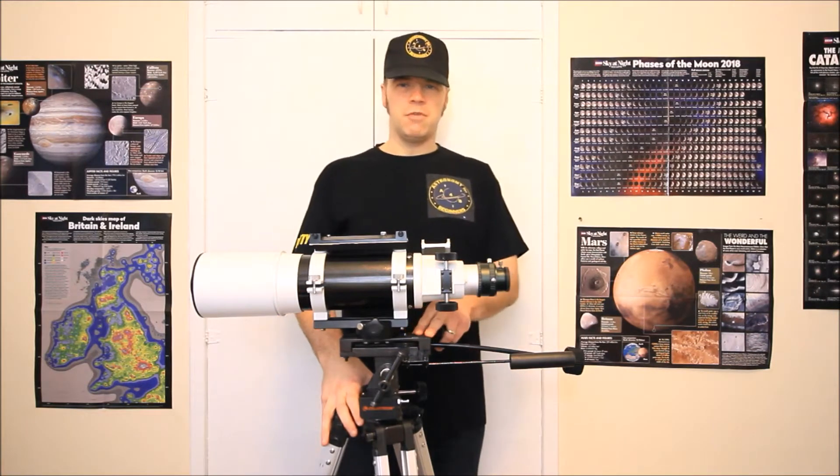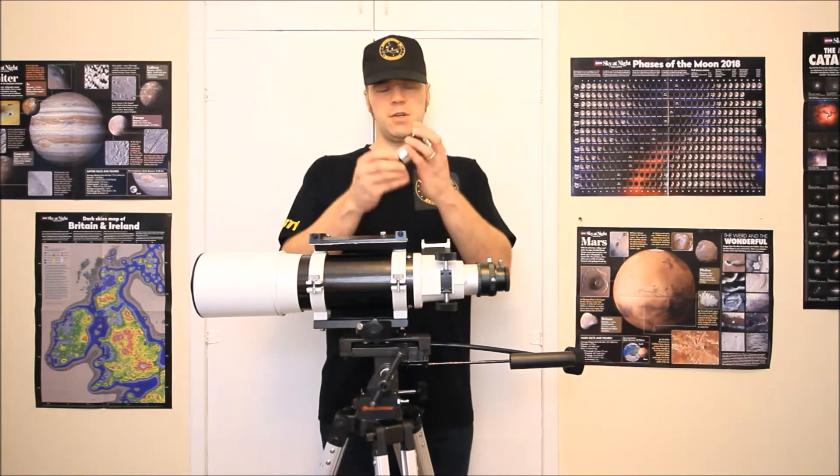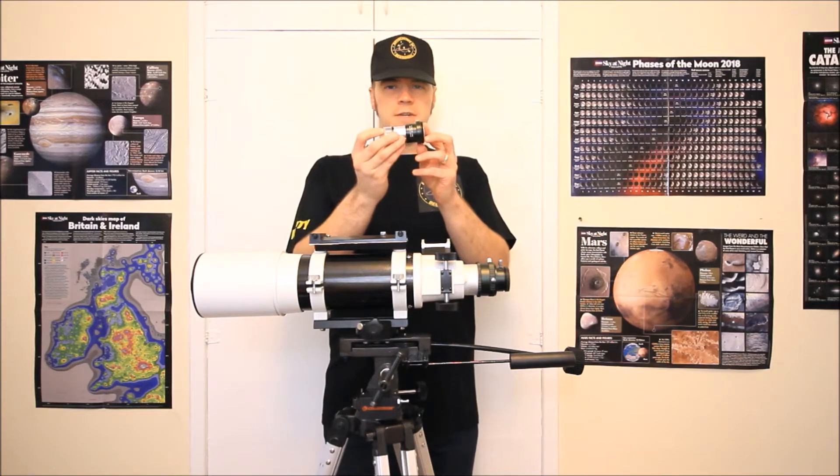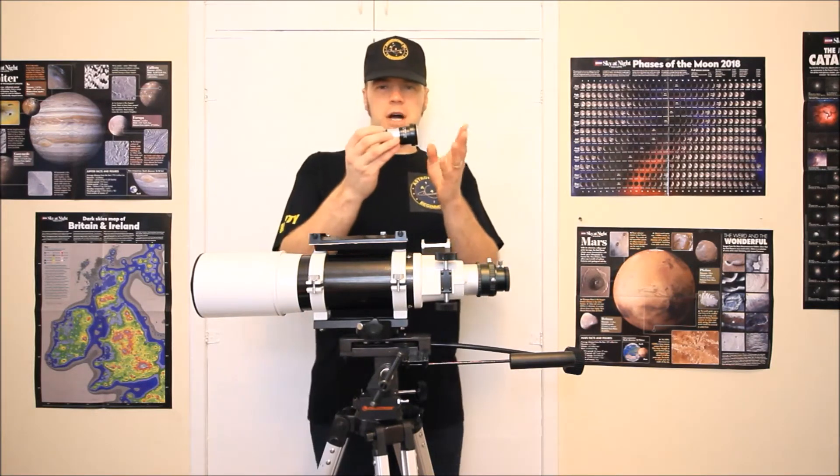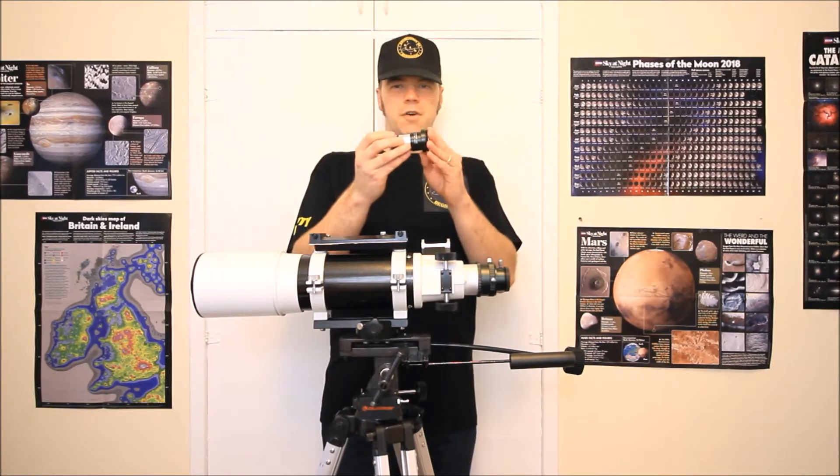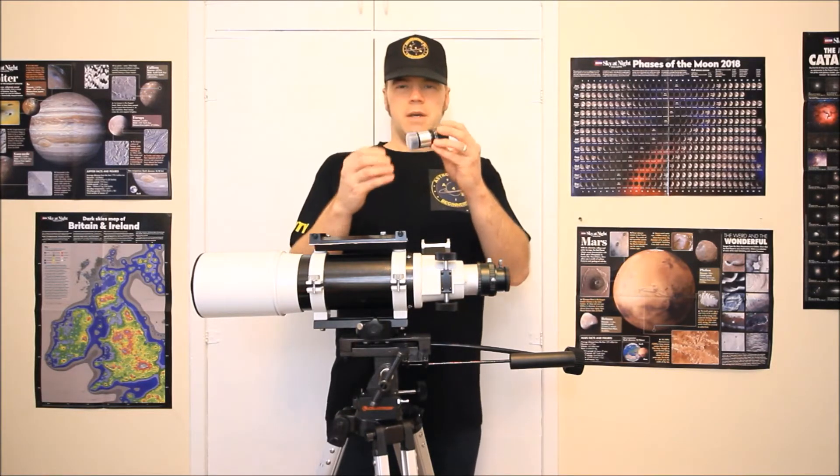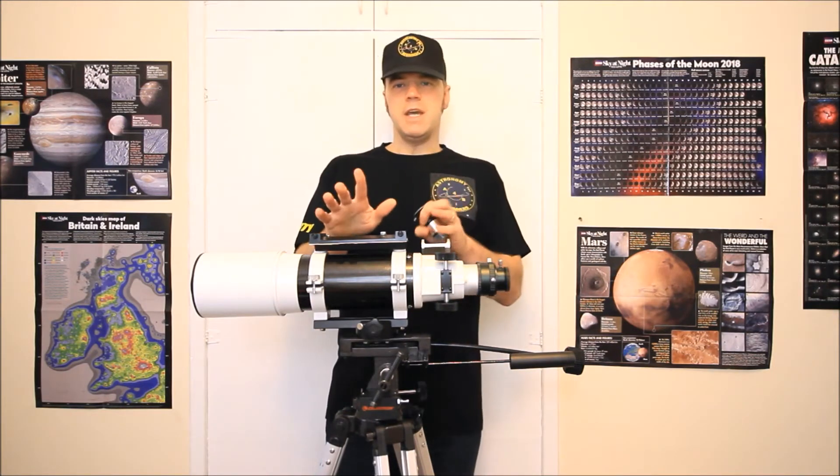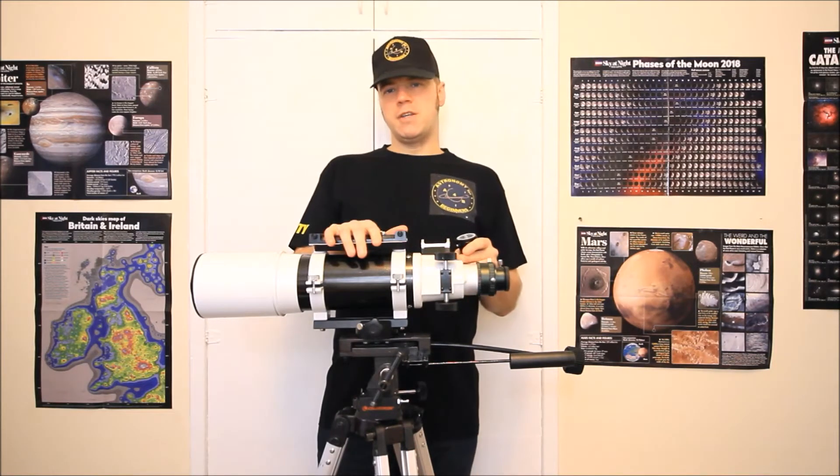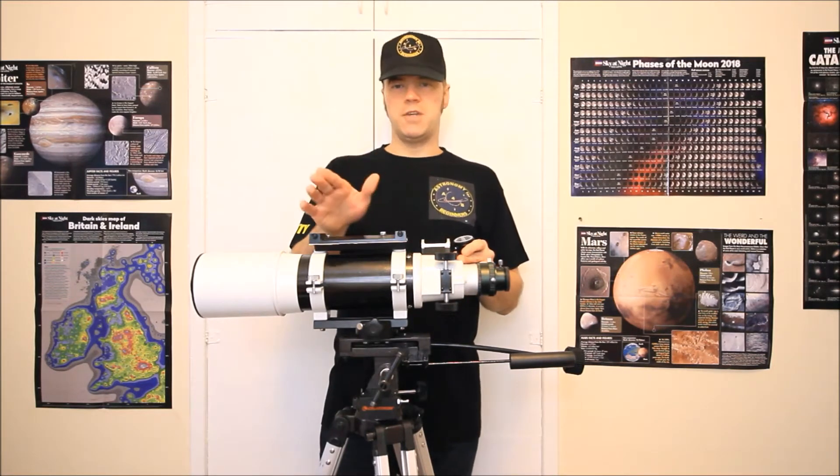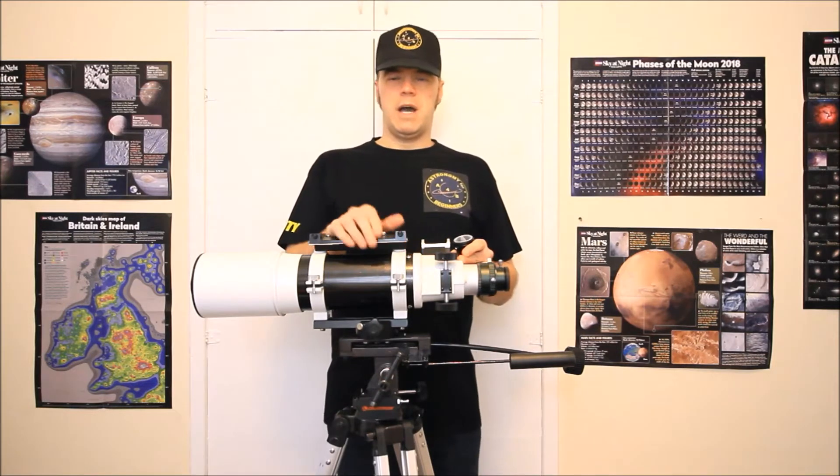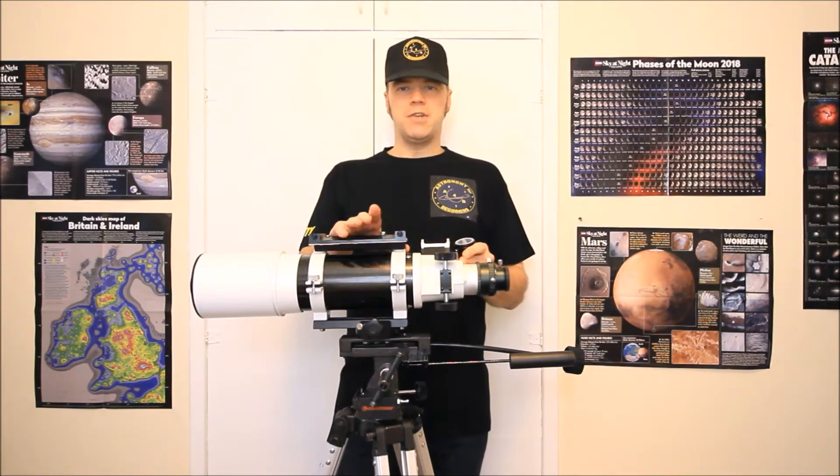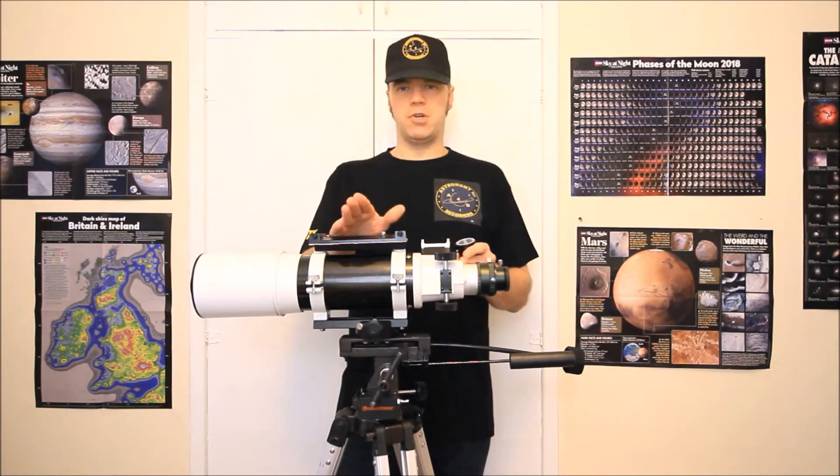Today I'm going to do a product review on this cool little item here, a universal Barlow lens purchased online at a great price of £13.99. The reason I'm doing a review on this particular Barlow is that there are loads of bargains and accessories you can get for your telescope online, but you can buy a lot of decent stuff and a lot of cheap rubbish online.